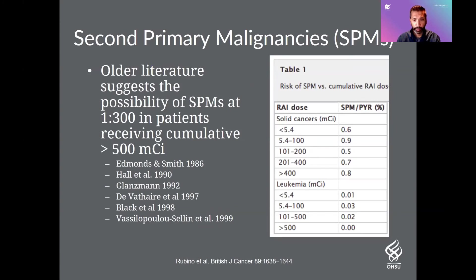This slide briefly addresses the risk of secondary malignancies. One of the larger and more recent studies shows that as you increase the dose, for both solid cancers and leukemias, it doesn't really change the statistics of how often you actually see this — suggesting the relationship is very loose and not really direct. The way I counsel patients is to say: you have a cancer now and that's what we're trying to treat, and not this almost theoretical risk of a second cancer that may or may not happen.